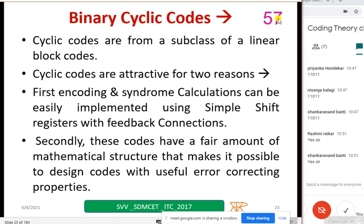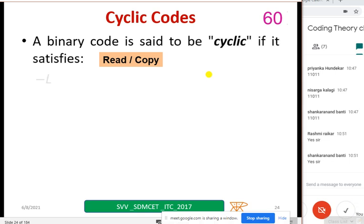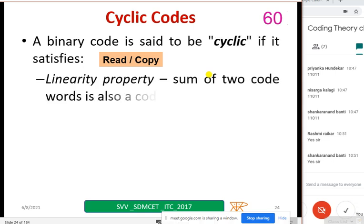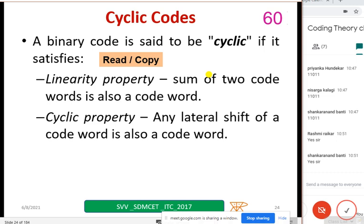This is a little information about a binary cyclic code. I'll wait for a minute, you can read it twice or copy down one or two lines from this. A binary code is said to be cyclic if it satisfies linearity property - what is that? Sum of two code words is also a code word. Cyclic property - any lateral shift of a code word is also a code word. So these two you have to remember: one is a linearity property and there is a cyclic property. We can read it or copy it. You have 50 seconds. The two code words if you add, I should get another code word. Cyclic property we'll see with the example.